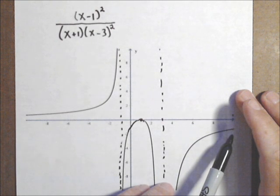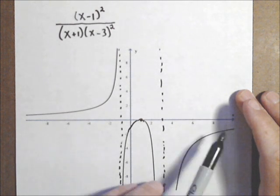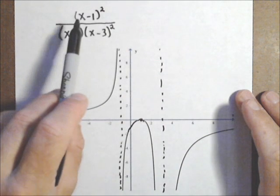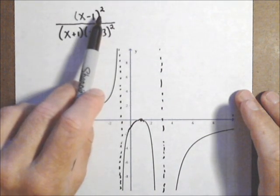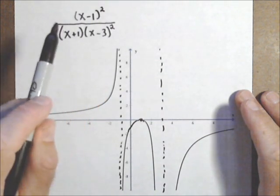So we want the degree of the denominator to be larger than the degree of the numerator. Well, that's what we have, because we have a degree three on bottom and a degree two on top. So this looks like it's working pretty well.